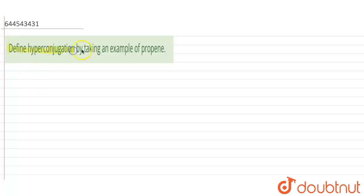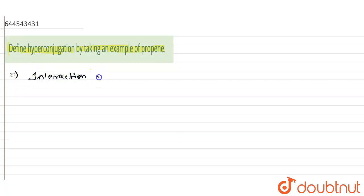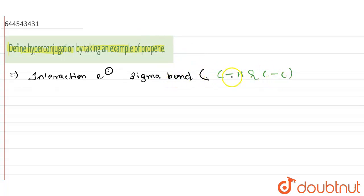In this question, we need to define hyperconjugation by taking an example of propene. So, hyperconjugation effect means it is the interaction of electrons in a sigma bond. The sigma bond mostly considered is the carbon-hydrogen bond, and sometimes the carbon-carbon bond.